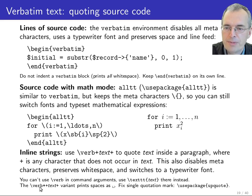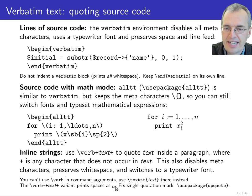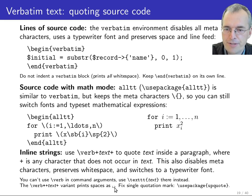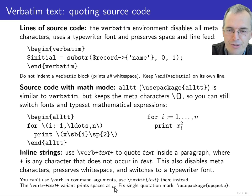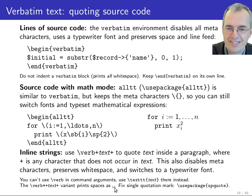There is a verb-star variant of that command that also gives a graphic indication of the space character — a little bracket on the bottom. That can be useful when you want to explain a syntax where the number of spaces is significant.